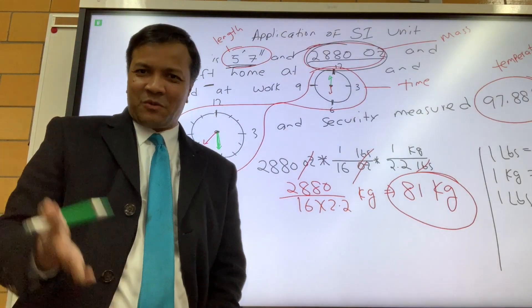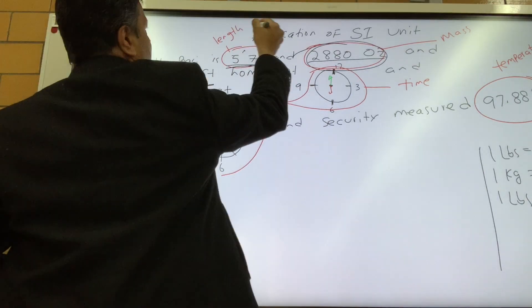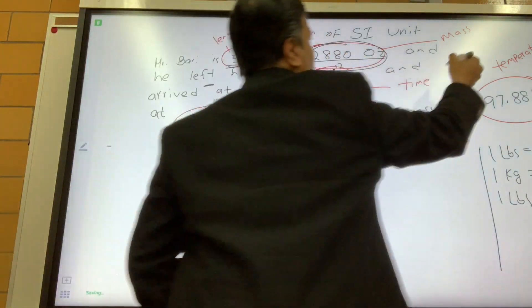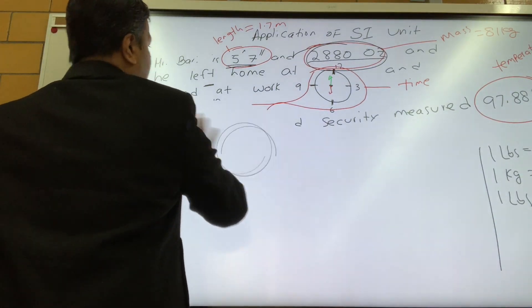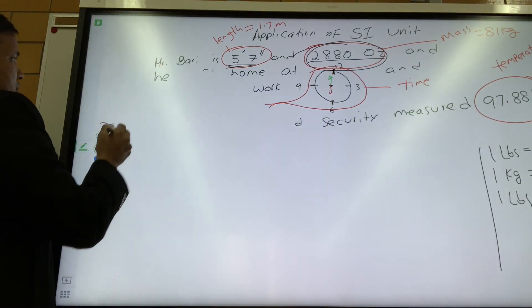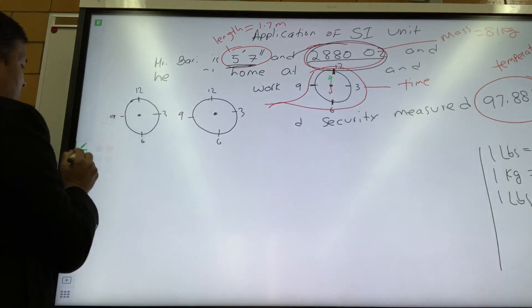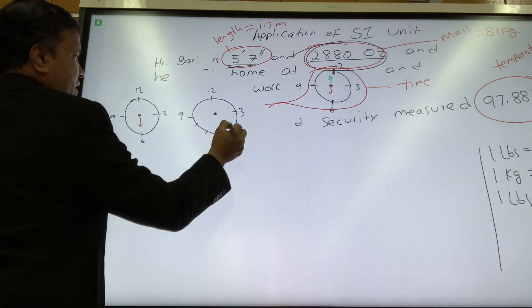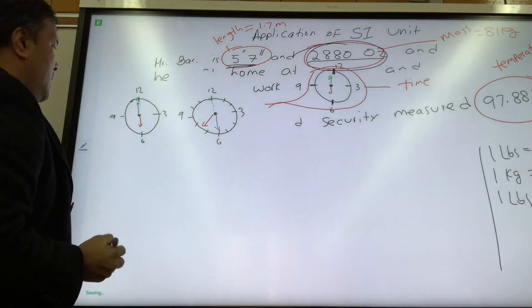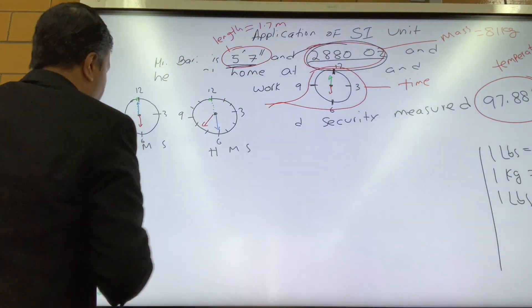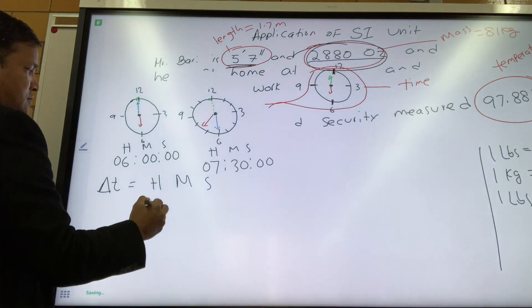So we have two left: elapsed time and temperature. So let's do the elapsed time. In order to calculate elapsed time, we have to draw the clock. So let's draw both clocks. Let's make some room to draw the clock. So let's draw the hour hand and minute hand, and we can ignore the second hand.